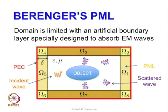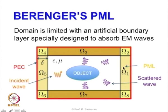We are interested in modeling a domain consisting of an object with incident and scattered waves. We truncate this domain using certain layers — layer 1 through layer 8 — and we will see the similarities and dissimilarities between these layers later. The domain is truncated using a perfect electric conductor, and the thickness of each layer is delta, which we will define at a later stage.